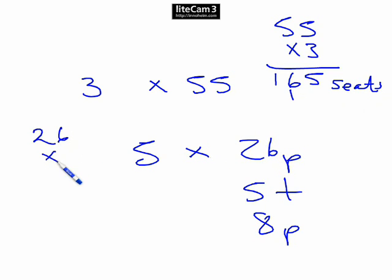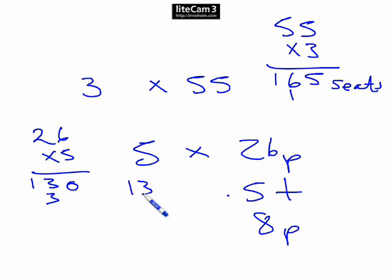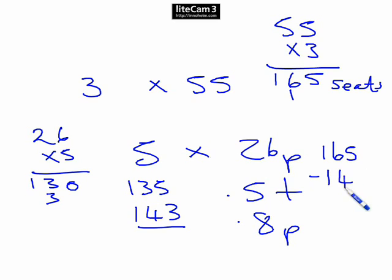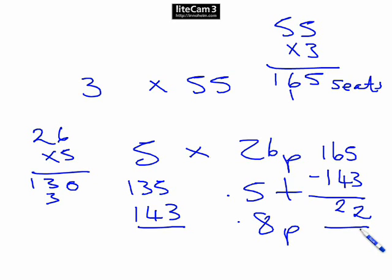26 times 5 gives us 130 pupils. Plus 5 teachers gives us 135, plus 8 parents gives us 143 total going — pupils, teachers and parents. We've got 165 seats, so we want to know how many more pupils could go: 165 take away 143 leaves us with 22. So 22 pupils is our answer.